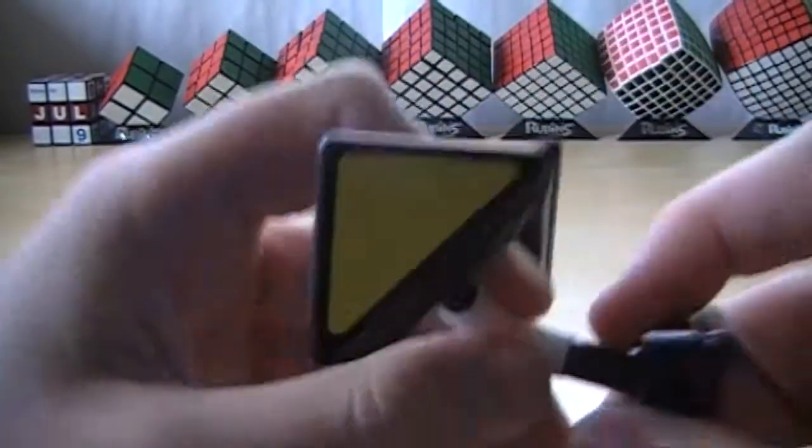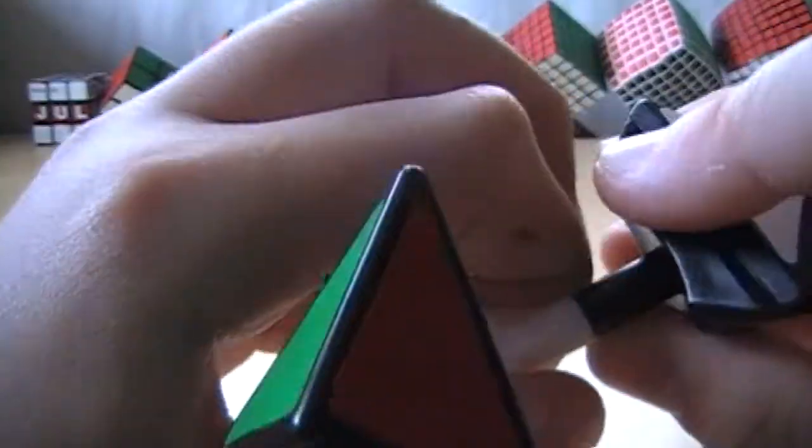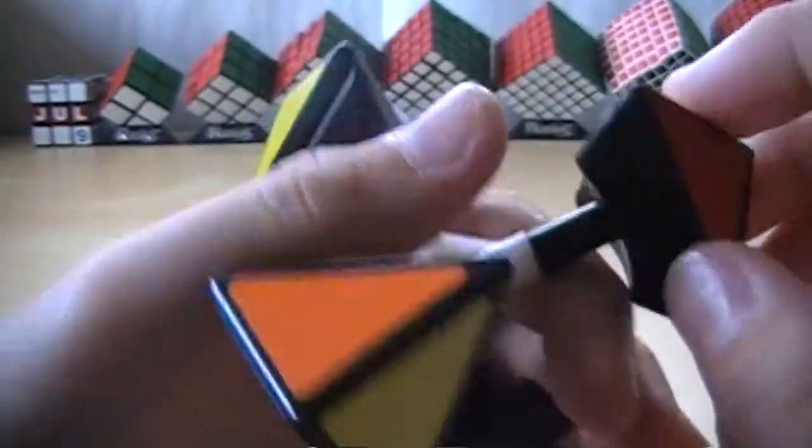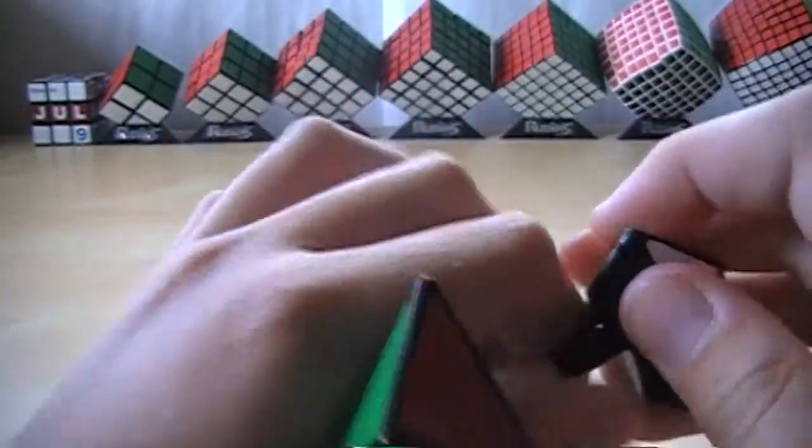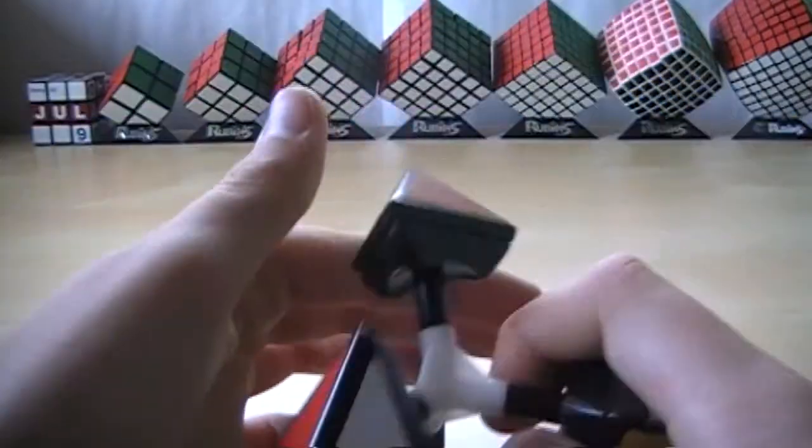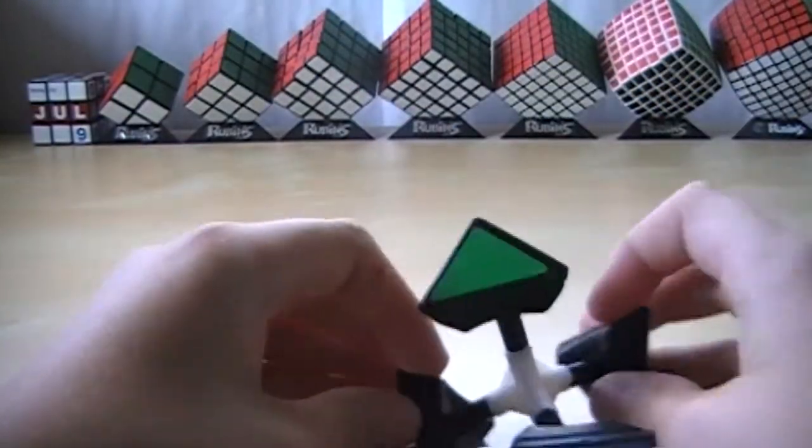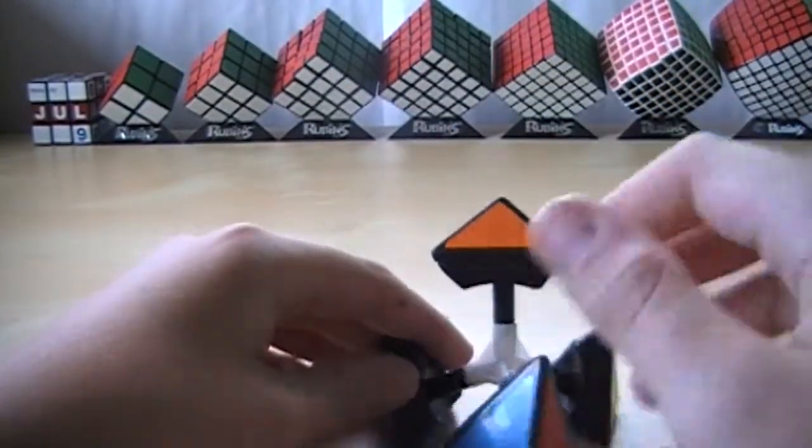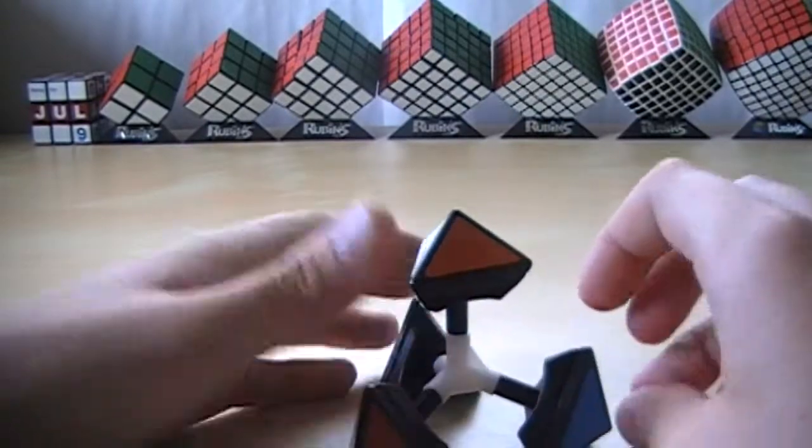So if you know the LanLan cube, the tints are pretty tight and even if you can get these center caps off, which are glued on really well, you probably can't tighten it very much. So I'm going to show you a way that you can decrease the popping on it.